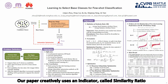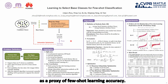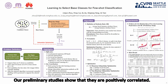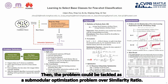Our paper creatively uses an indicator called similarity ratio as a proxy of few-shot learning accuracy. Our preliminary studies show that they are positively correlated. Then the problem could be tackled as a submodular optimization problem over the similarity ratio.